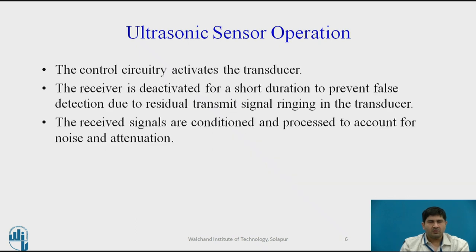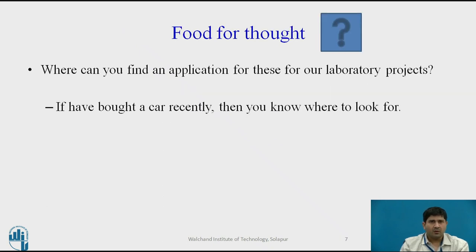To summarize the measurement process: the control circuitry activates the transducer, the receiver gets deactivated to prevent false detection, and then the received signals are conditioned and processed to account for noise and attenuation.